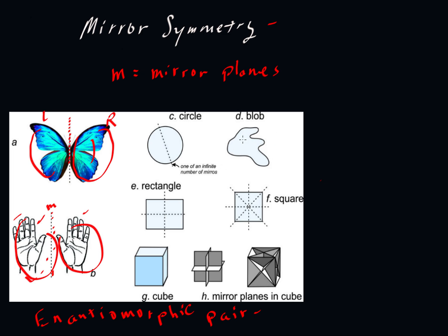How about over here in letter D, the blob? There are no lines we can draw here. There's nothing we can draw where this side would be the mirror image of the other side, no matter how we draw it. So there are zero mirrors here. So we could say that the mirrors were equal to zero.